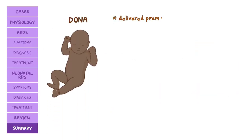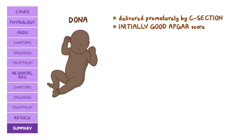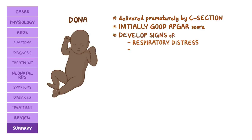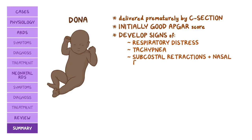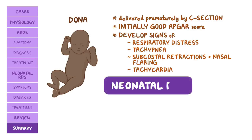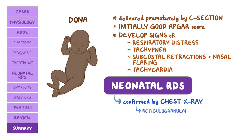Donna was delivered prematurely by C-section but initially had a good Apgar score. Soon after delivery she developed signs of respiratory distress: tachypnea, subcostal retractions with nasal flaring, and tachycardia. Given her history and risk factors, neonatal respiratory distress syndrome was high on the differential, and this was confirmed by a chest x-ray showing the classic reticulogranular ground glass appearance with air bronchograms.